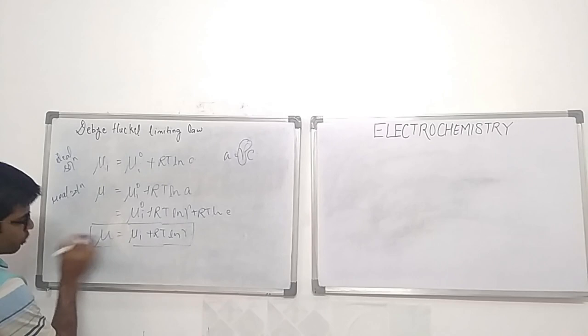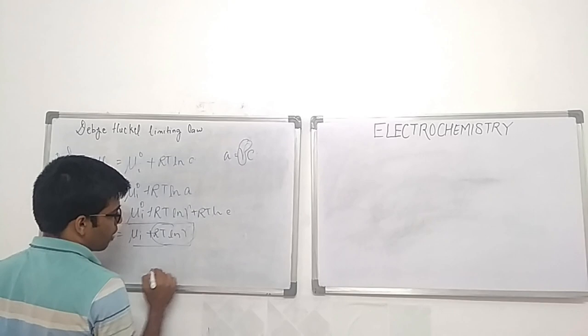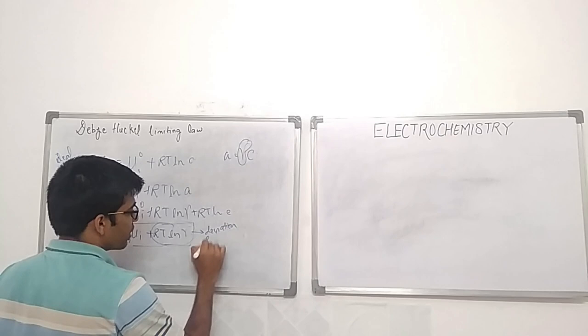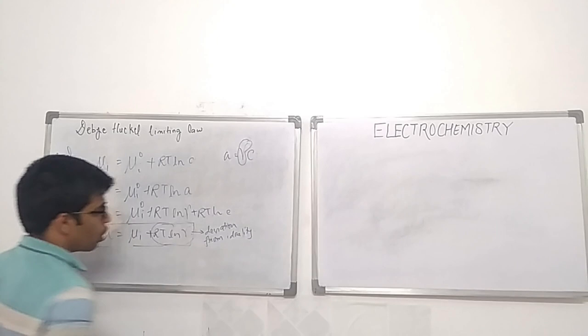The chemical potential of the real system differs from that of the ideal system by a factor of RT ln γ. This is the part which causes the deviation from ideality, and by using the Debye-Hückel limiting law, we want to account for how much the system is deviating from ideality.